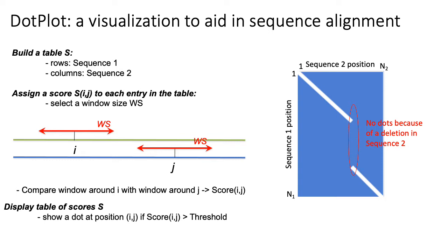Considering the cell in this heat map at row i and column j — what I'm calling s_ij — there are only two possible values. S_ij is either one, which happens if the short sequence around position i in sequence one and the short sequence around position j in sequence two have a high alignment score, meaning they match pretty well. Otherwise, the score at position ij is zero.